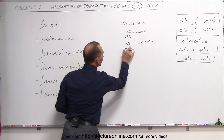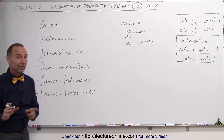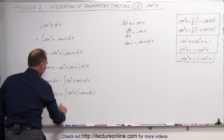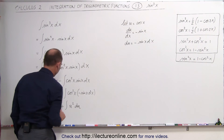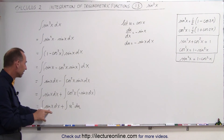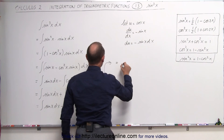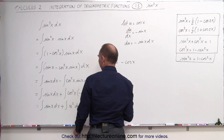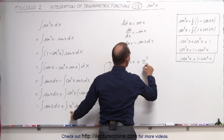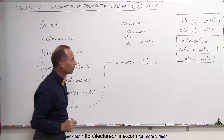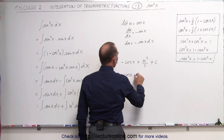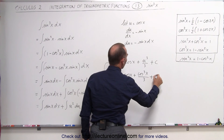Now we have the exact differential du, and since cosine of x equals u, cosine squared of x is u squared. This becomes the integral of sine of x dx plus the integral of u squared du. The integral of sine of x is negative cosine of x, and integrating u squared gives u cubed divided by 3. Replacing u with cosine of x, the result is minus cosine of x plus cosine cubed of x divided by 3, plus a constant of integration.